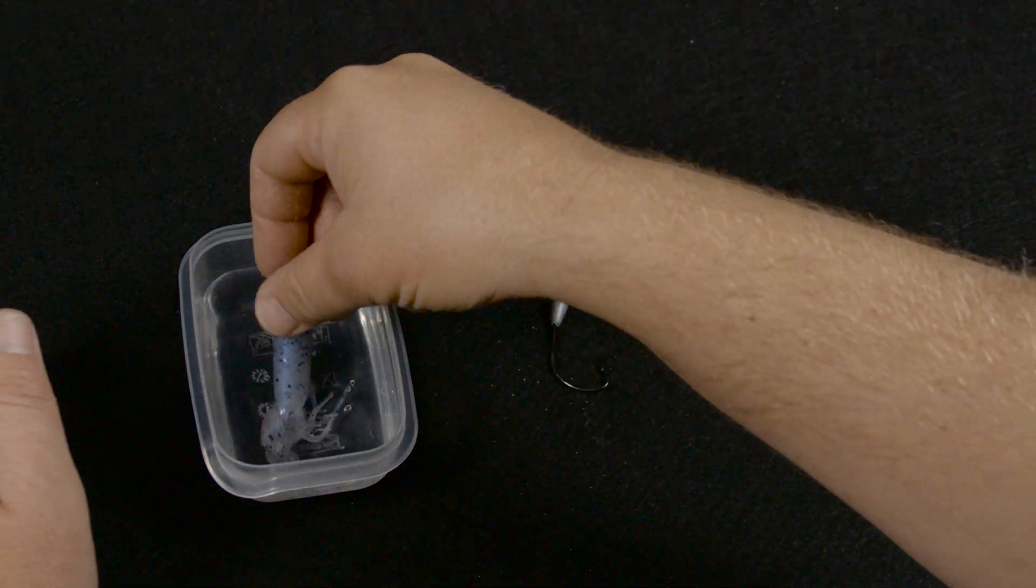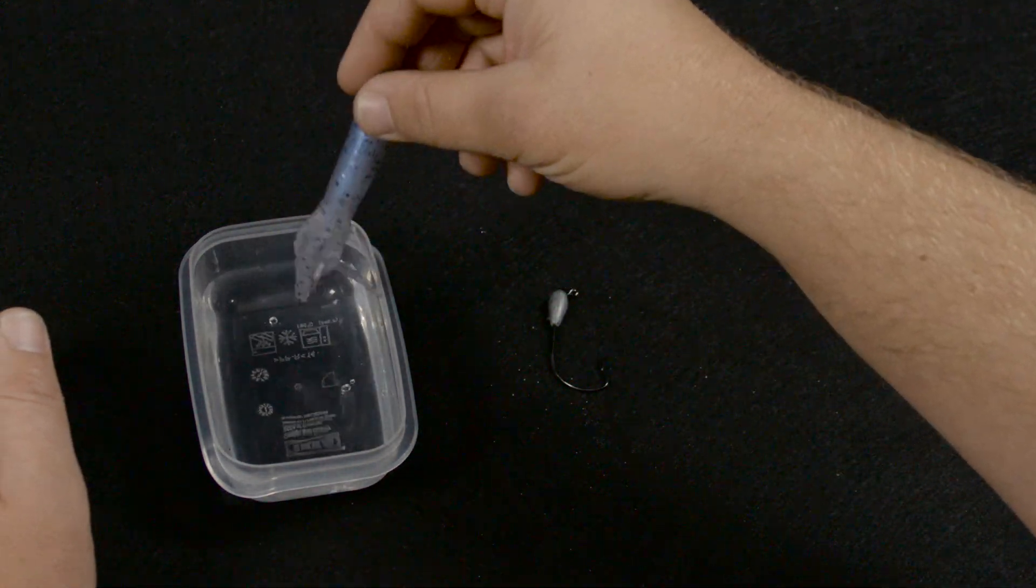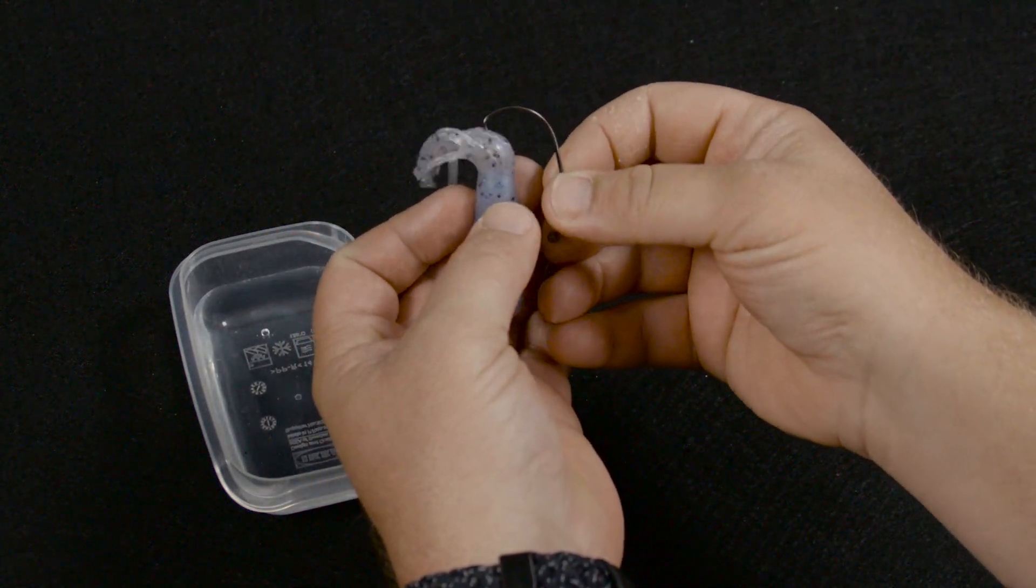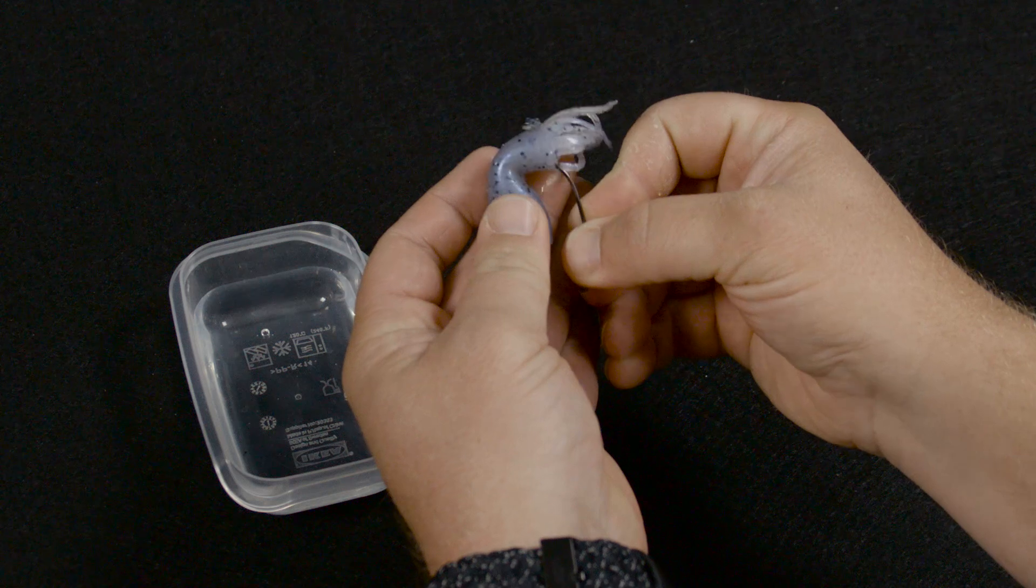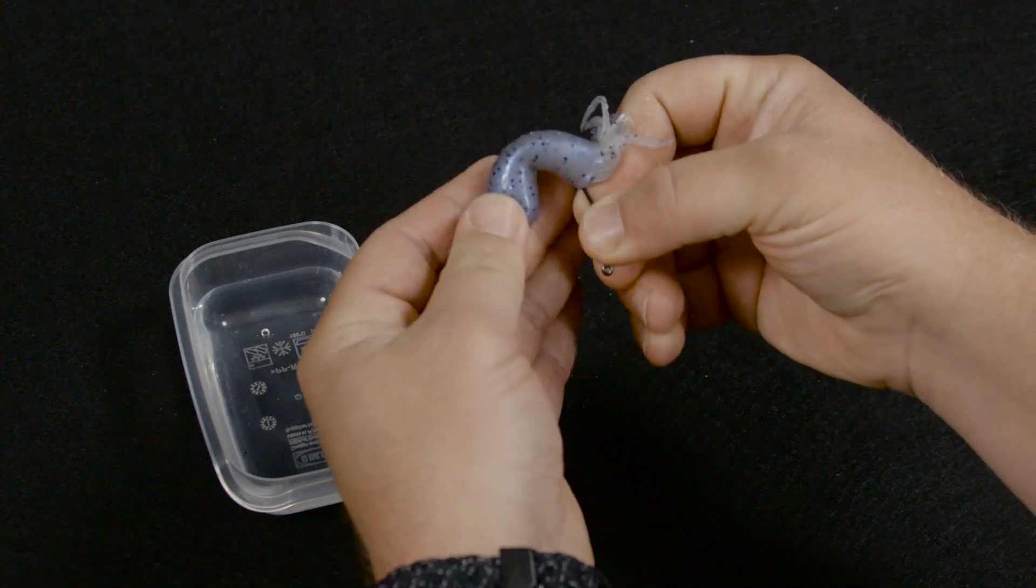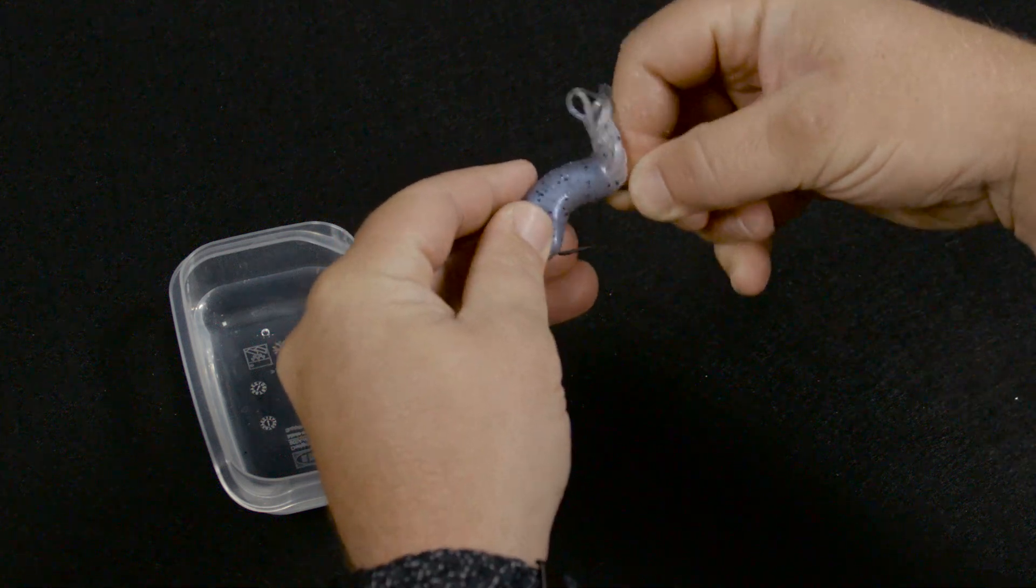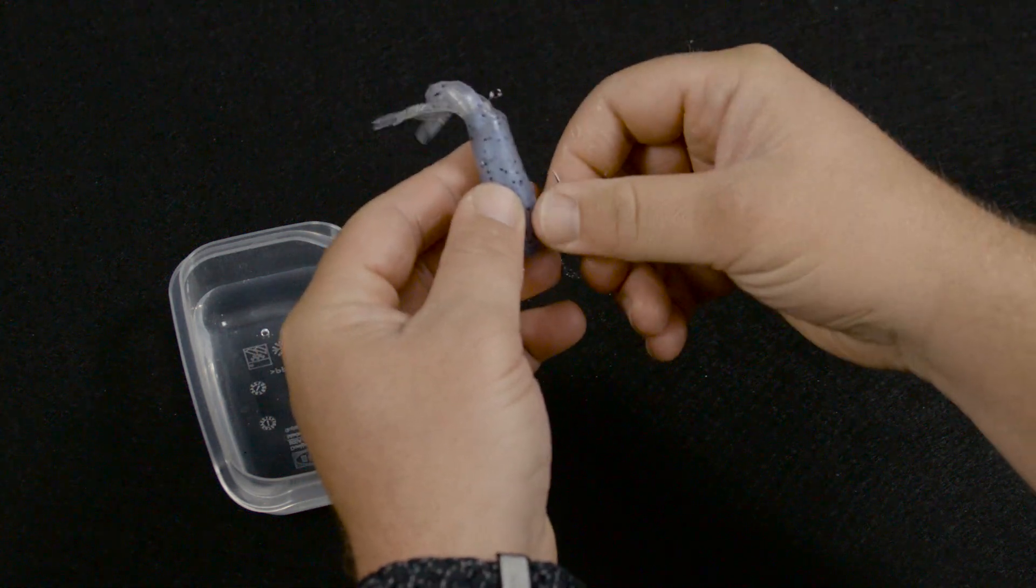Essentially what you're going to want to do is get your tube wet - that'll help you along the process. Then start by inserting the hook point through the back of the tube, and bring it all the way up to probably about a half inch from the nose. Bring that hook point through.